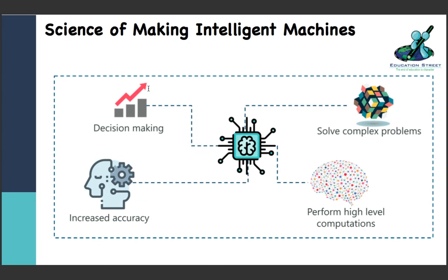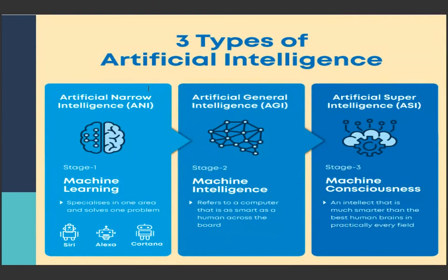Now coming to three types of AI - basically these types are based on their capabilities. The first type is Artificial Narrow Intelligence. I'm going to cover them in a more elaborate way in the next few slides. The second type is Artificial General Intelligence - AGI. And the third type is Artificial Super Intelligence - ASI.